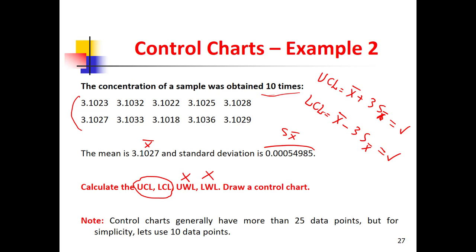Note that control charts generally have more than 25 data points. For simplicity, especially in this course, we use only 10 points — but real control charts usually have more than 25 data points.